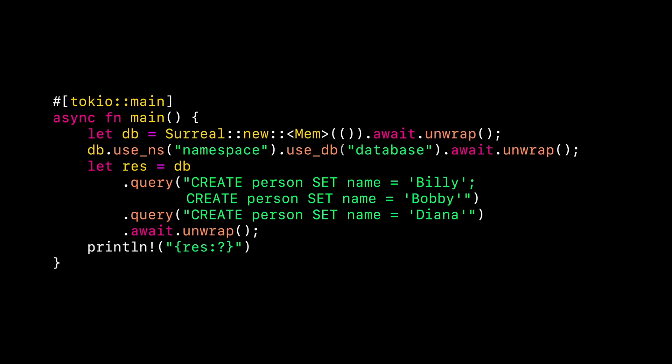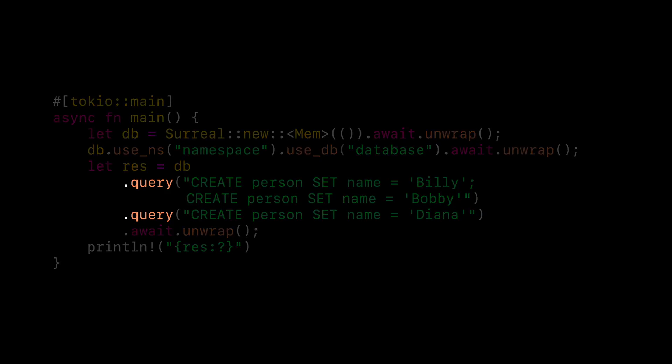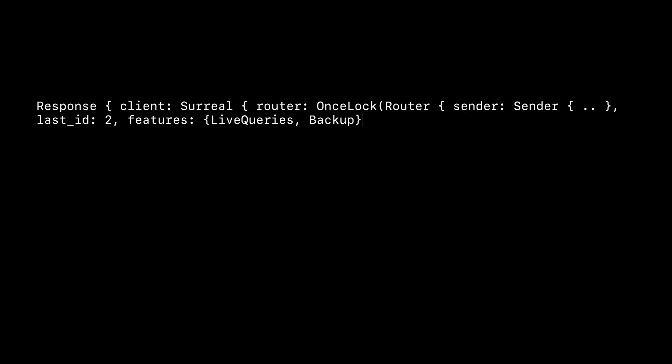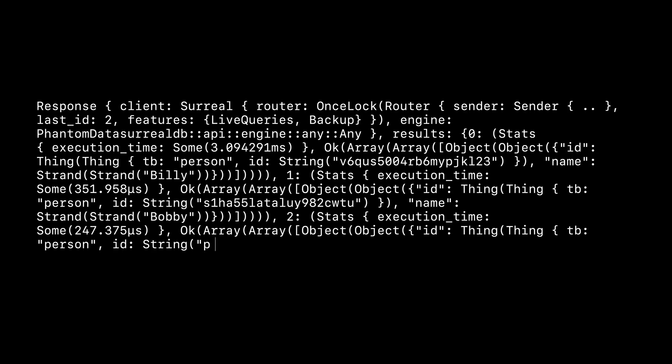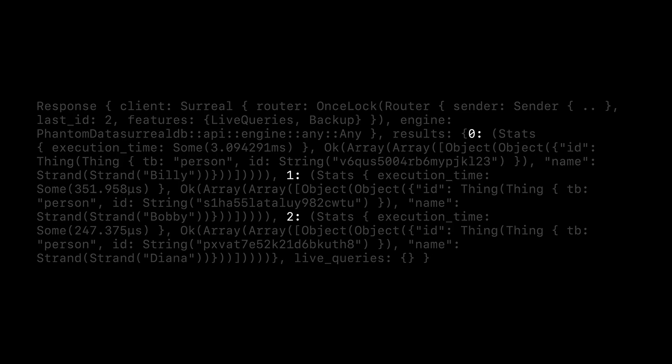Let's show this by tacking on two more statements before we await the function. Any number of statements can be included inside a single string, or you can keep using dot query for each new set of statements if you find it more readable. Since we want to send three queries in a single query, the database has returned results at index 0, 1, and 2.